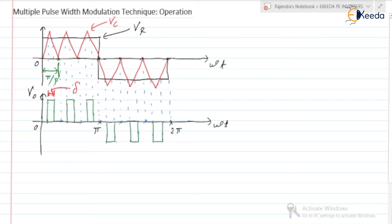Here the output voltage is EDC, so this magnitude is equal to EDC. And this magnitude will be minus EDC; here it is minus EDC, and here it is plus EDC. This is plus EDC, this is minus EDC.